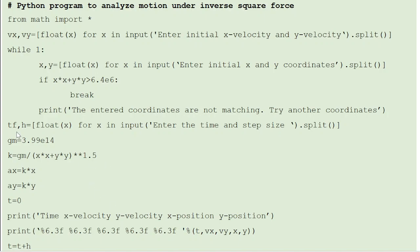Then you can import the time and step size using split function at once. We know that the value of g×m is 3.99×10¹⁴. Then GM divided by (x² + y²)^(3/2), you call it as a constant k. So now you can write ax = k×x and ay = k×y. Initial time is 0. And all initial values are already available, so let's print them straight away. So the titles are: print time, x velocity, y velocity, x position, y position. And you print the first set of values or the initial values.